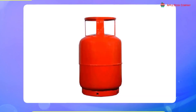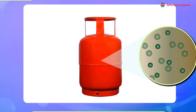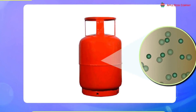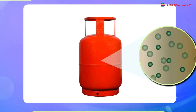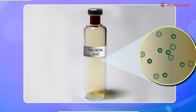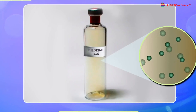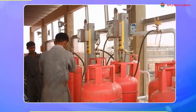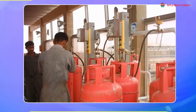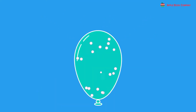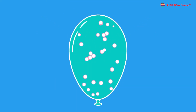Gases. The molecules in gases are far apart from one another. Therefore, there is hardly any attraction between the molecules in a gas. The molecules of gases move around freely in any direction. We cannot hold them in an open container — they fill the entire space in a closed container. Therefore, gases have no fixed shape or volume. The arrangement of molecules in gases can be seen in the example of a balloon.